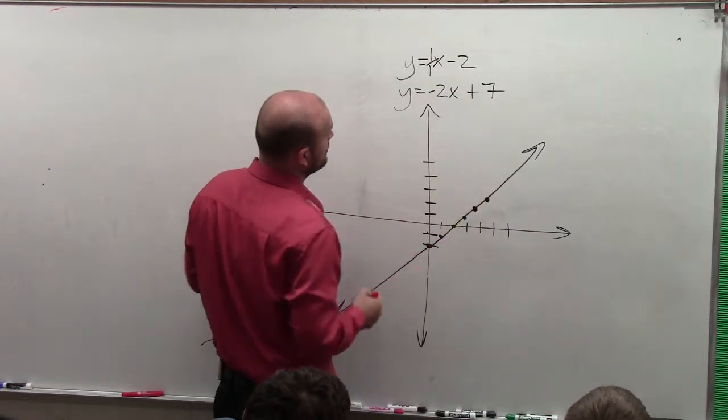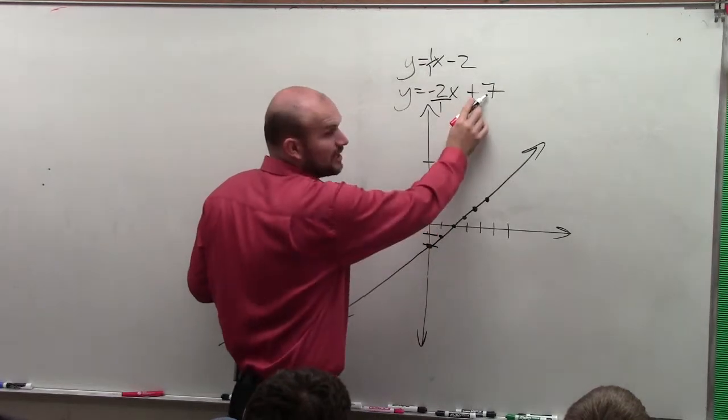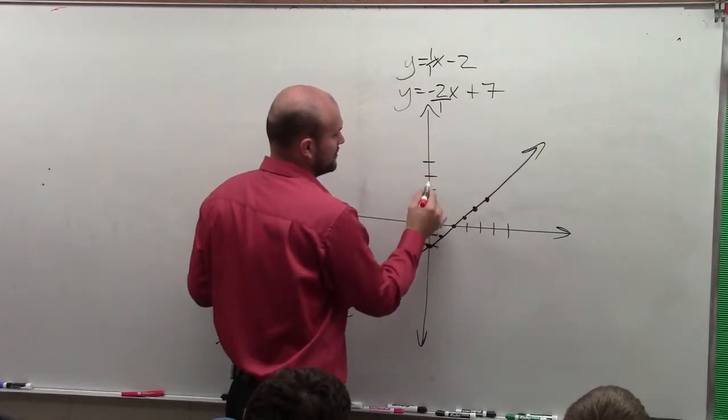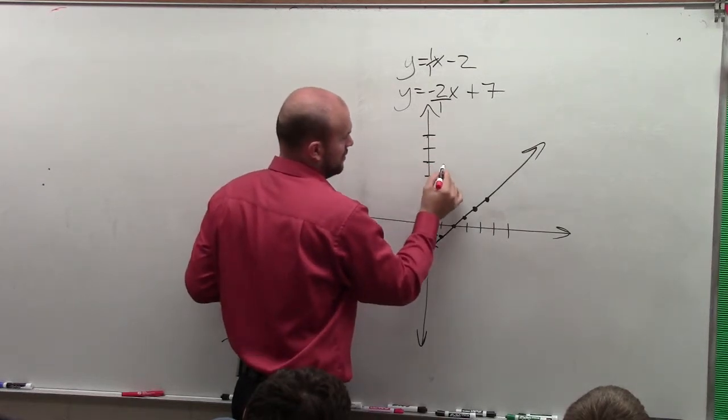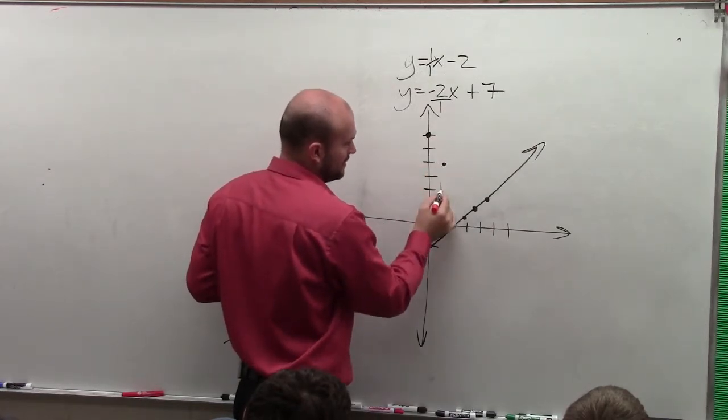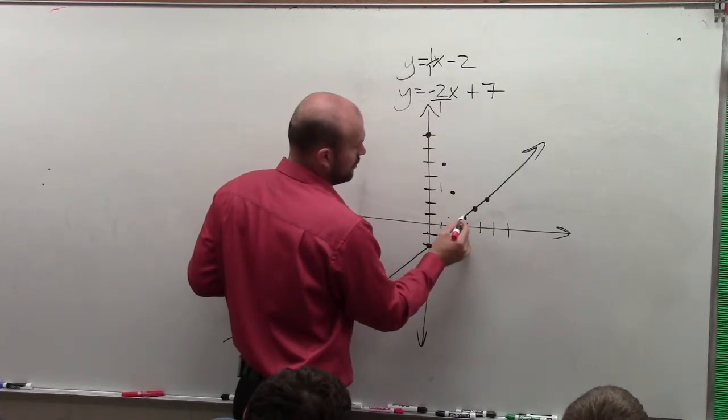Is that negative 2 over 1? Yes, so you write that as negative 2 over 1. Now for this one, I need to go up 7. And then I go down 2 over 1. So that's my y-intercept, down 2 over 1, down 2 over 1, down 2 over 1.